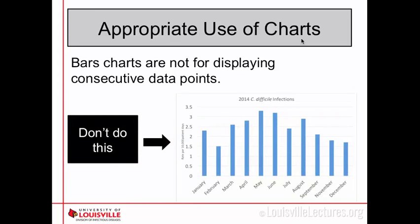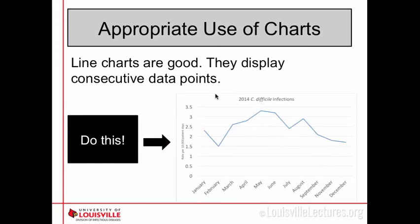Bar charts, while they can show you magnitude, aren't good for displaying consecutive data points. If you have a monthly total, you don't want a bunch of different bars for each month. What you should use instead is a line chart, because that can give you an idea of how your data points change over time.